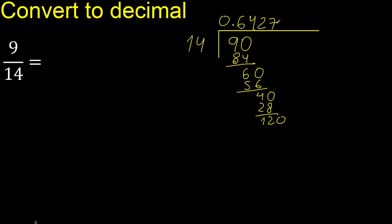Next step: multiply by 7. 14 multiplied by 9 is greater, therefore we multiply by 8. We subtract and complete.